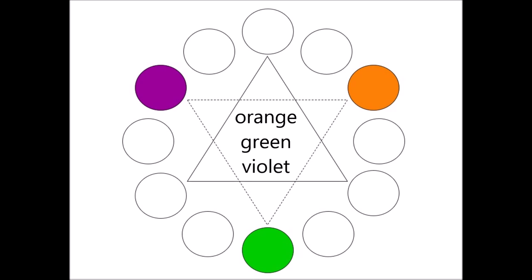Orange, green, and violet are the secondary colors. They are made by mixing two primary colors together.